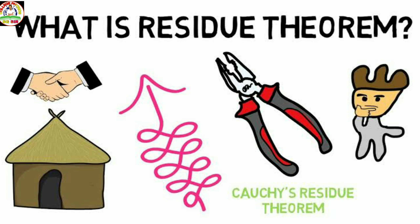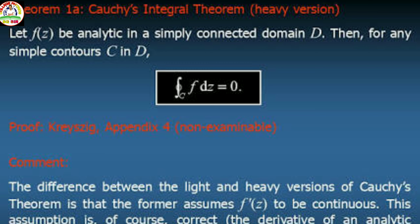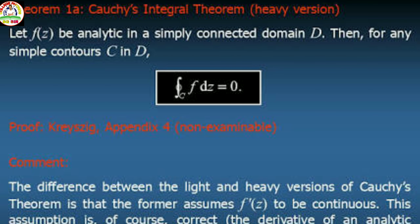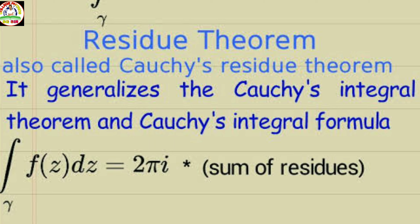If f is a regular function of z and if f'(z) is continuous at each point within and on a closed curve C, then by the Cauchy integral theorem, the integral of f dz equals zero. If f is analytic inside and on a simple closed contour C except at a finite number of poles z₁, z₂, ..., zₙ inside C, then by the Cauchy residue theorem, the integral of f(z) dz equals 2πi times the summation of the residues.